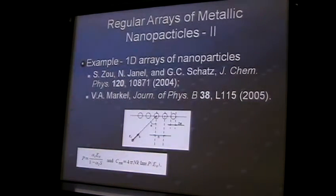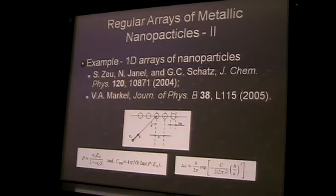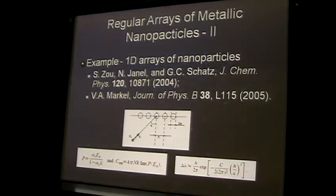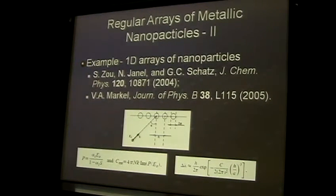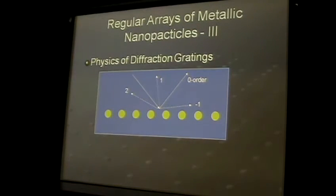Schatz and Martin suggested looking at the denominator and asking: what happens when α_s times S equals one? In that case, polarization would be infinite, and extinction would be infinite. They calculated the wavelength range in which that would happen, and it turns out that it should be exponentially narrow. If you look at that, it's almost zero under proper conditions - so you can have as narrow a resonance as possible. That's the theory.